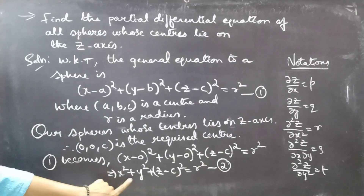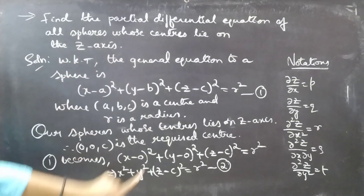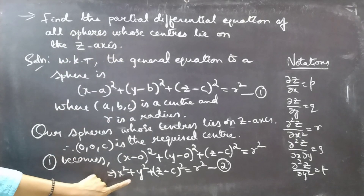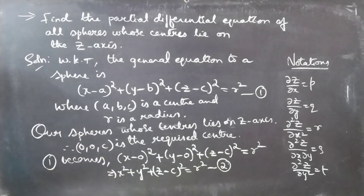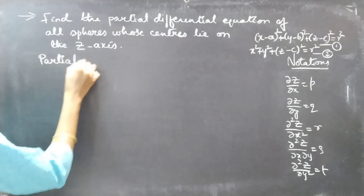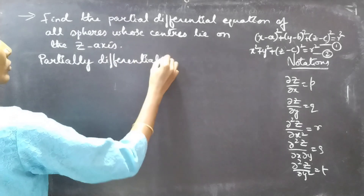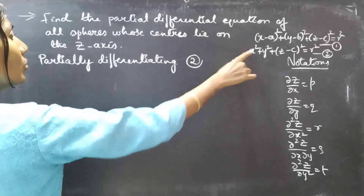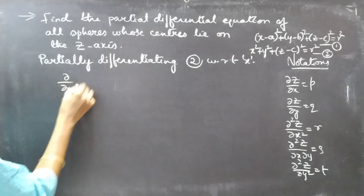We need to form the partial differential equation from Equation 2, the general equation of all spheres whose center lies on the z-axis. Now, partially differentiating Equation 2 with respect to x — applying ∂/∂x on both sides of Equation 2.